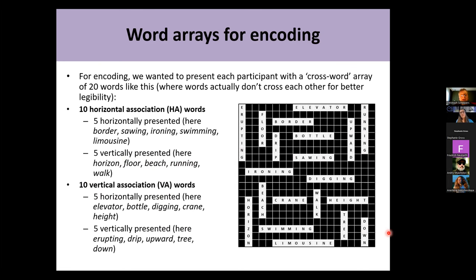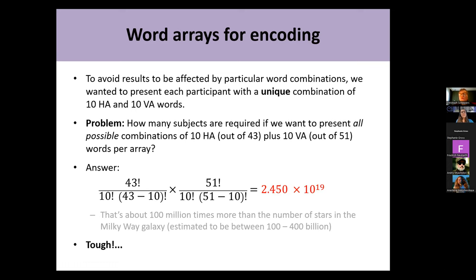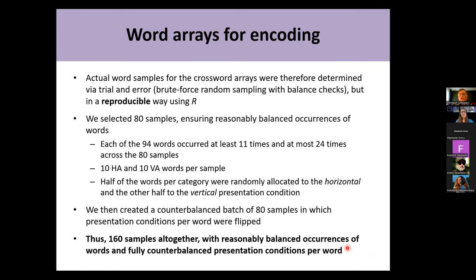To avoid results being affected by any particular combination of words, we wanted to present each participant with a unique combination of 10 horizontal and 10 vertical association words. The problem: the number of subjects required to present all possible combinations out of 43 and 51 words respectively is about 100 million times more than the number of stars in the Milky Way galaxy. So instead, we determined the word samples via brute-force random sampling with balance checks, in a reproducible way using R.